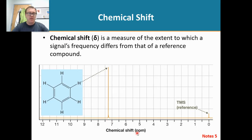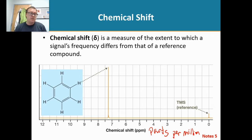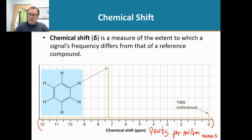Now ppm stands for parts per million. The x-axis is titled parts per million, and we can refer to that as a chemical shift. Parts per million, or chemical shift, these numbers on the x-axis tell us the frequency at which the protons in benzene resonate.